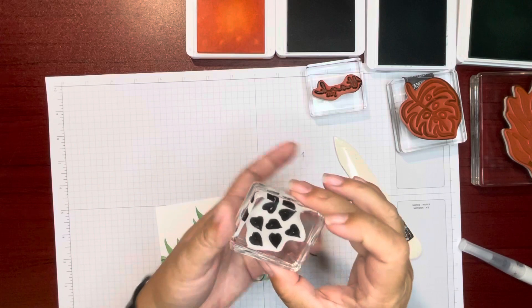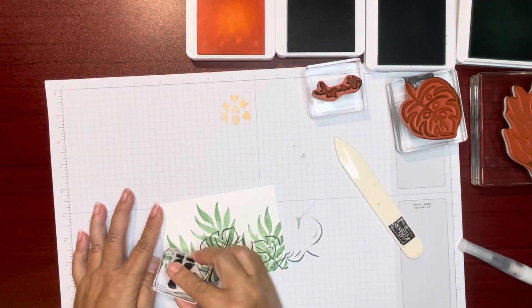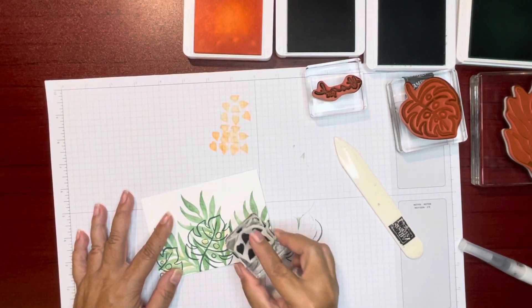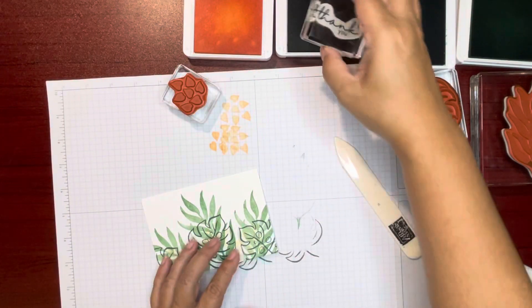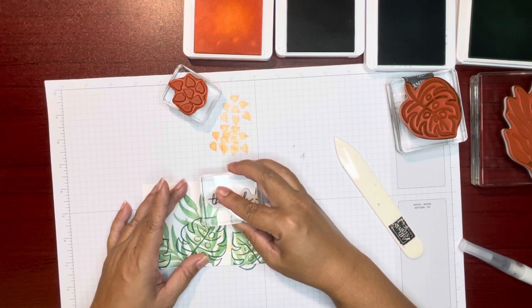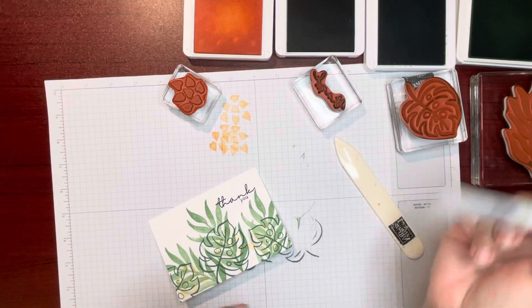And then I got this one here, this stamp in pale papaya. I'm gonna stamp off once and then stamp on. And I got the thank you in Evening Evergreen. I'm gonna stamp it right up there.